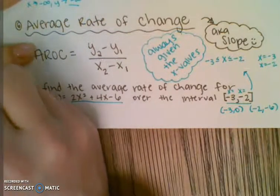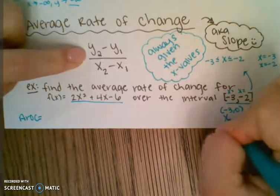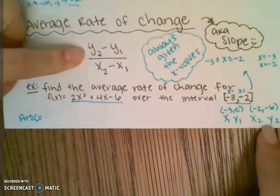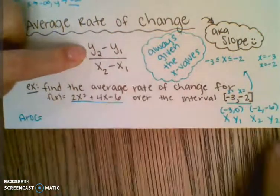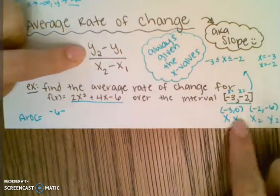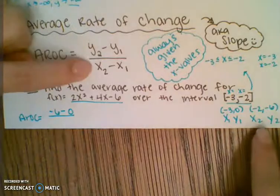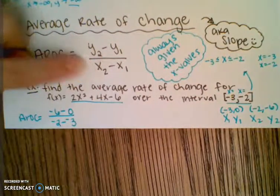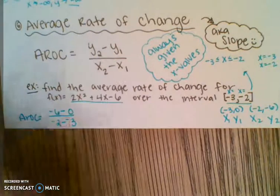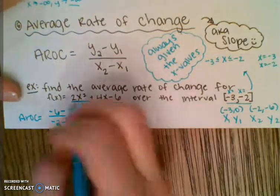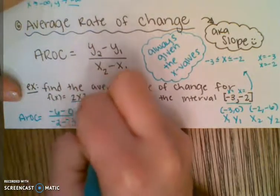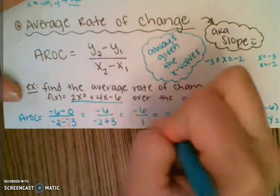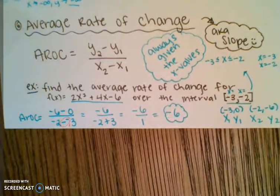My average rate of change formula says y2 minus y1 over x2 minus x1. This is x1, y1 and x2, y2 — your first point gets the 1s, your second point gets the 2s. So y2 minus y1 is negative 6 minus 0, all over x2 minus x1 which is negative 2 minus negative 3. Two negatives make a positive, so that's negative 6 over 1, which gives me negative 6 as my average rate of change.